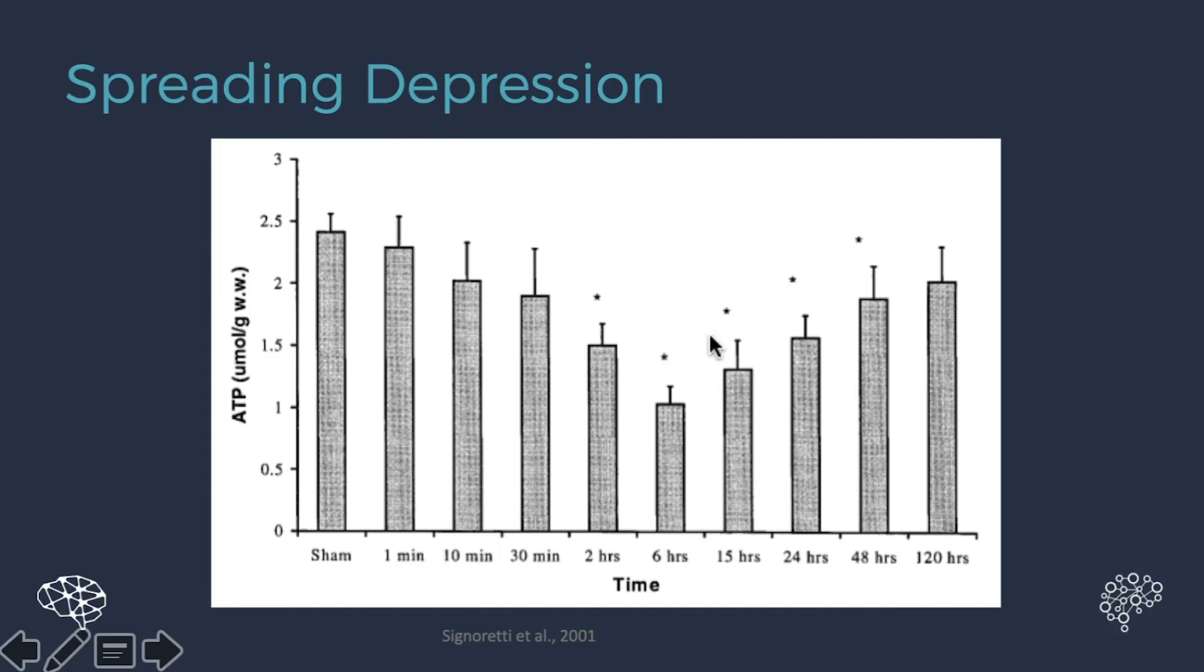Now this is in a mouse. So in a mouse, it takes a full five days to get the energy back up to where they were. So this is 120 hours, five days. There's no more star there, which means there's no more significant difference from the sham. So in a mouse model, a concussion takes five days to fully recover.